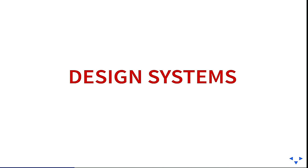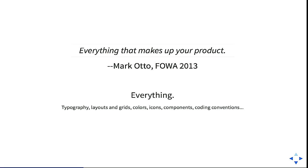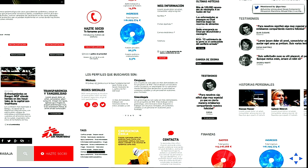Design systems — I'm sure some of you already know what that is because they're very prominent in the design world nowadays. A design system is everything that makes up your project or product, and everyone needs to know the same things. Here you have an example of a design system — a main navigation bar, some buttons, a pager, a breadcrumb — all with the same style.